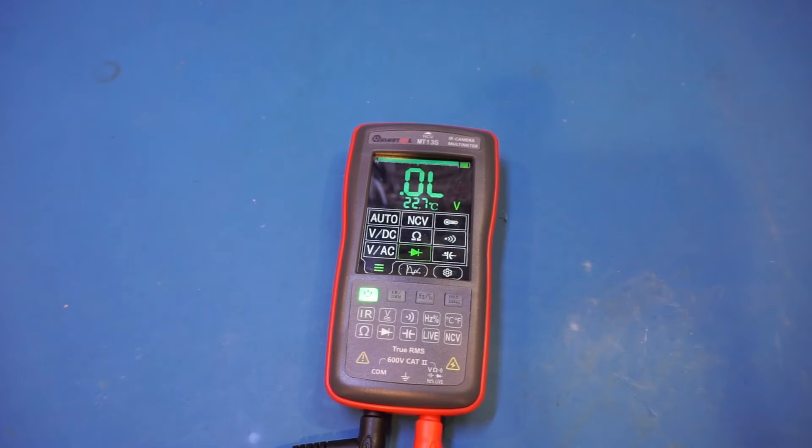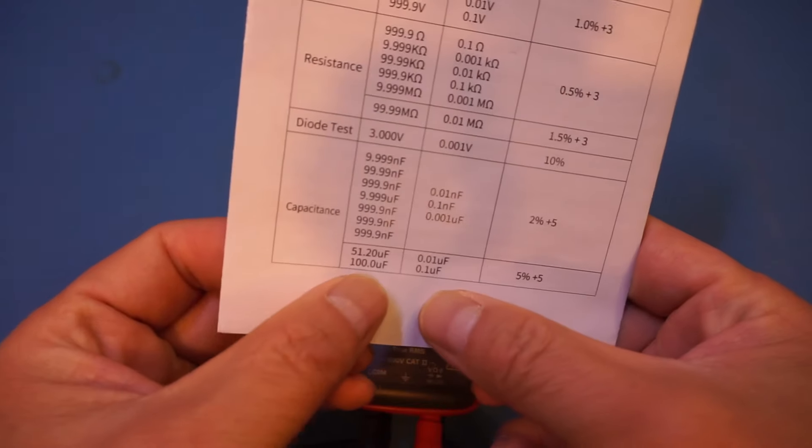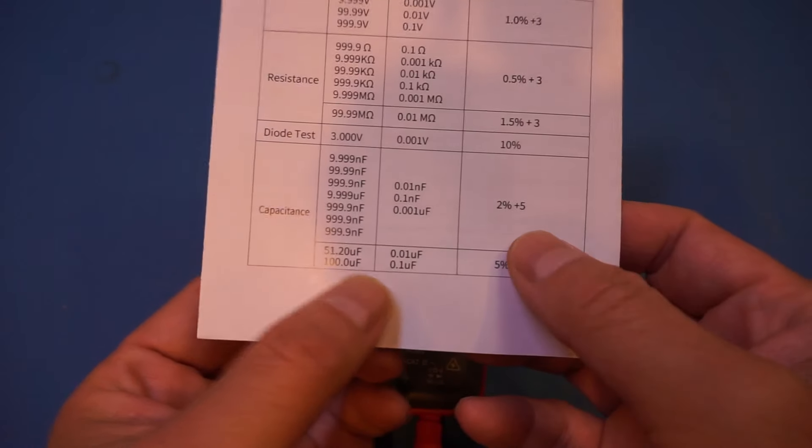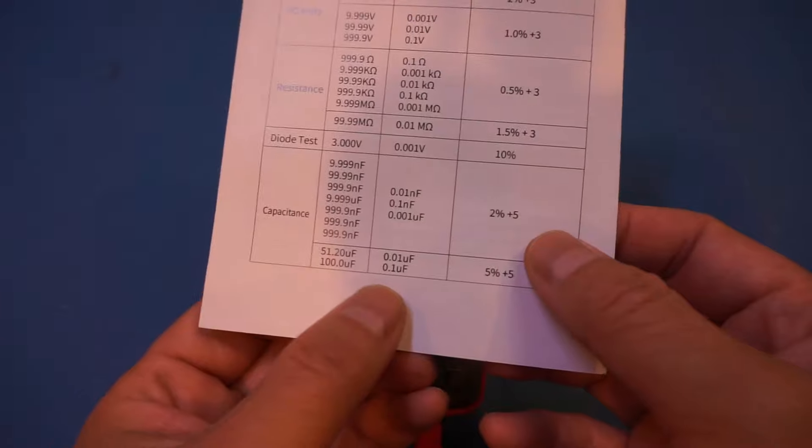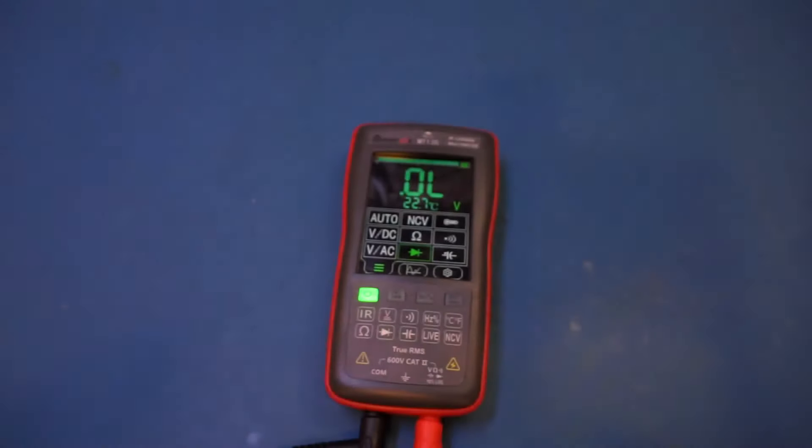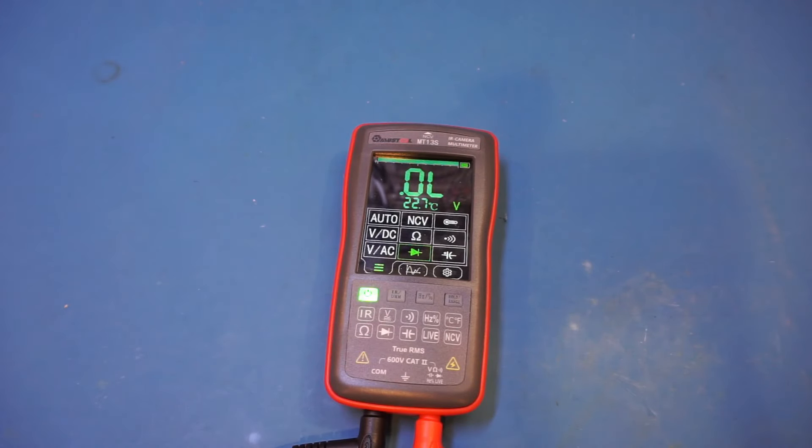Actually, I just took a look at the spec that is supplied with the MT-13S. You can see that the maximum capacitance listed here is actually 100 uF. Interesting. So there's definitely some discrepancy here. Now, I'm not sure which one is correct. Of course, the only way to find out is do some real measurement.